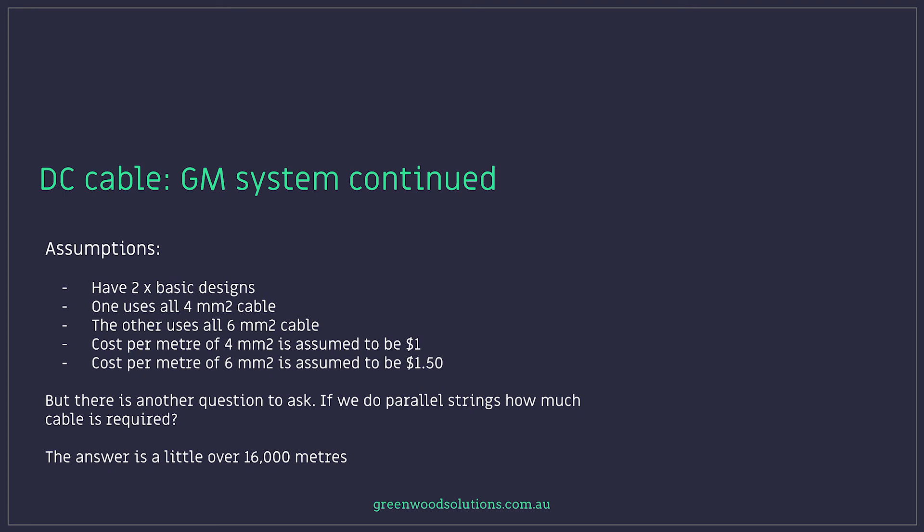Cost per meter of 4mm squared is assumed to be about $1. Cost per meter of 6mm squared is assumed to be $1.50.